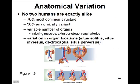There's a lot of anatomical variation — no two humans are exactly alike. About 70% of people have the most common variation of a structure, and 30% will have some anatomically variant version. Sometimes people have missing muscles or extra and missing vertebrae. Looking at the renal arteries, there are variations — sometimes a kidney drops into the pelvic region, and sometimes we see a horseshoe-shaped kidney.